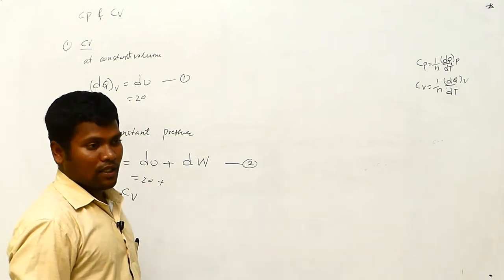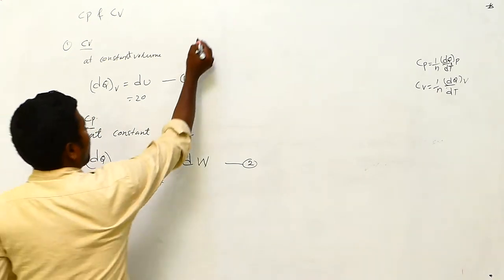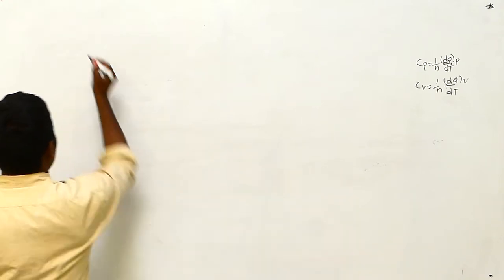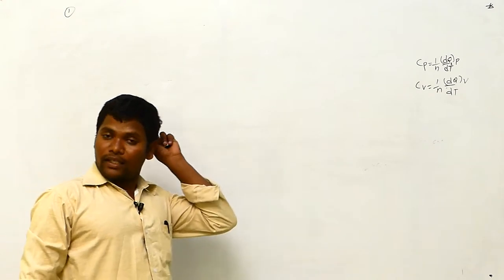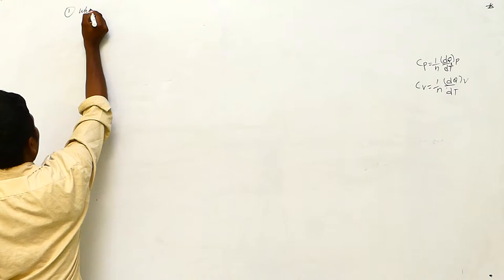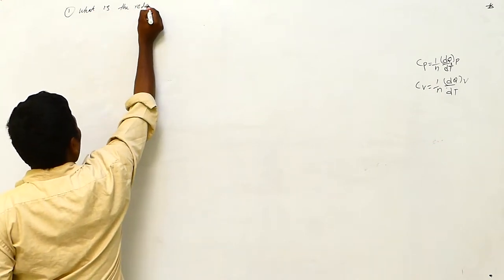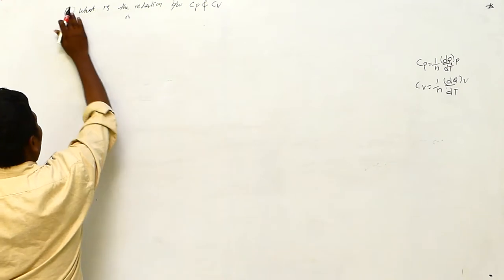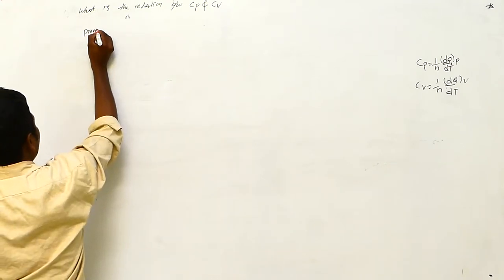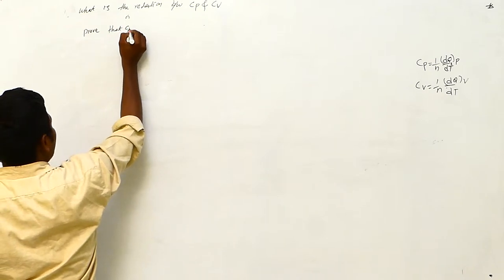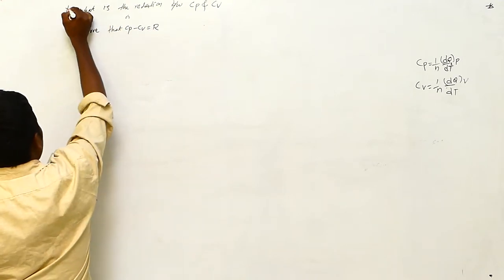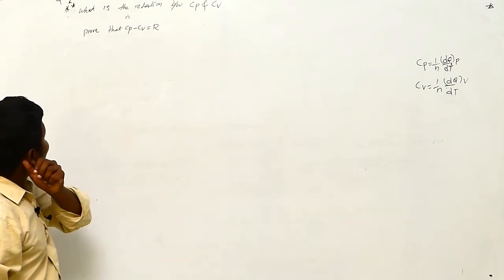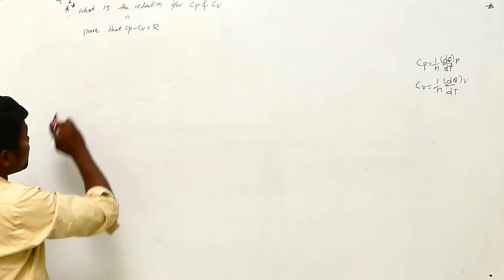Next I'm going to tell you about the relation between Cp and Cv. This is very important for the exam — you may get a question: what is the relation between Cp and Cv, or prove that Cp minus Cv equals R. This is worth four marks.